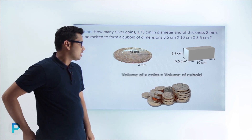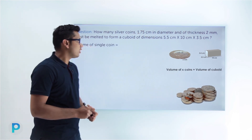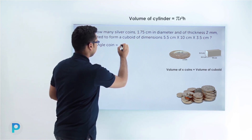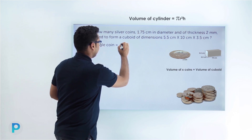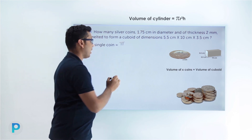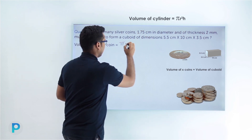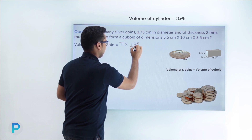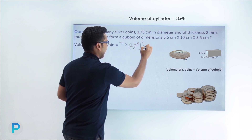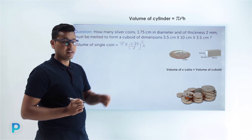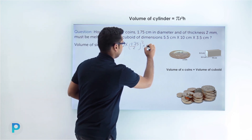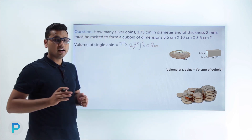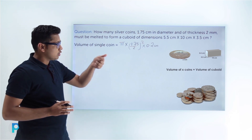Let's first find out the volume of a single coin. Since the coin is in the form of a cylinder, its volume equals π r² h. The radius of the coin is 1.75 divided by 2, and its thickness is 2 millimeters, which we convert to 0.2 centimeters.